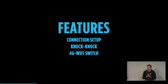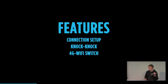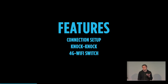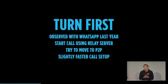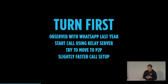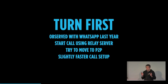So Duo has some interesting features. First is the connection setup — Google was very interested in that last year. The other is Knock Knock, which basically shows the caller's video before you accept. And another big thing they're proud of is the switch between 4G and Wi-Fi. Looking at WhatsApp, we found they go to a relay server first, establish a connection to it, and then once that's working, they try to move to peer-to-peer — giving a slightly faster call setup.